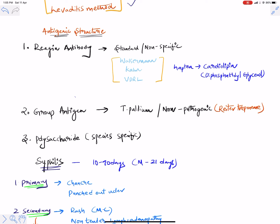The antigenic structure is very important because it relates to diagnostic tests for syphilis. Once syphilis antigens enter the body, the body produces antibodies — specifically IgM and IgG. These antibodies are called reagin antibodies. Measuring IgM and IgG helps in diagnosis, but since IgG and IgM production is non-specific to syphilis, these tests are called non-specific or standard tests.